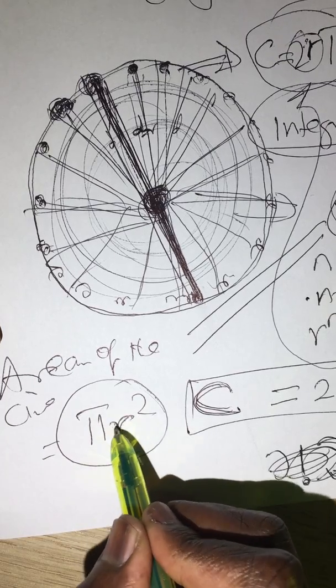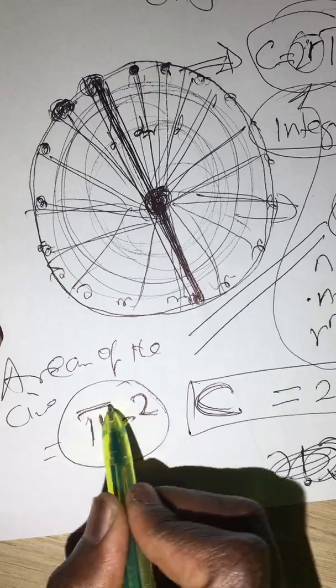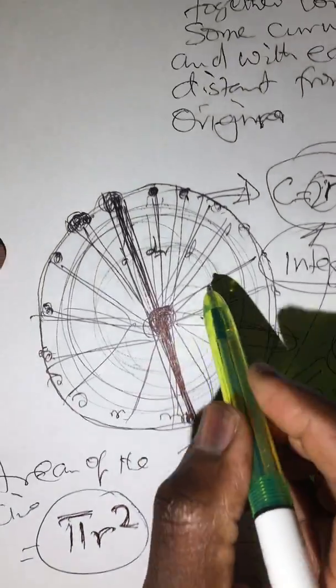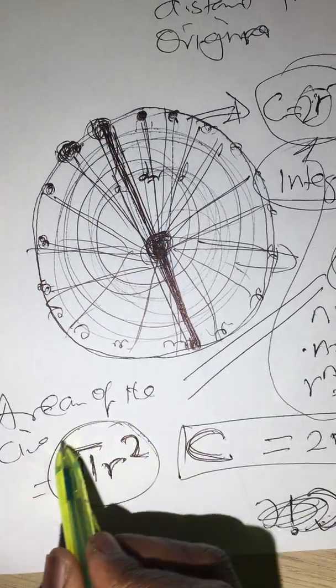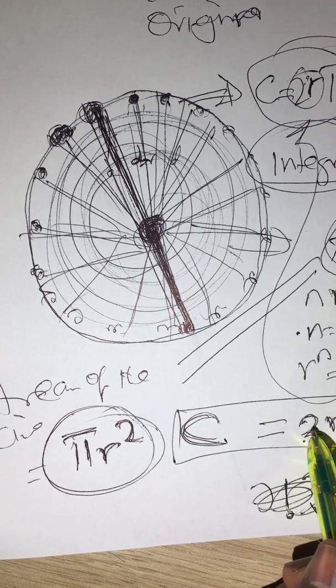So this one actually symbolizes the integration of those lines. Now when you differentiate this one, you get the circumference of the radius.